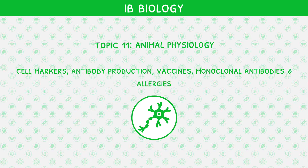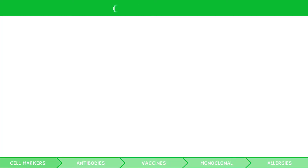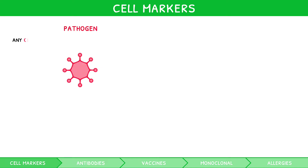Before watching this video, we recommend you have watched both our IB Biology Topic 3 and Topic 6 video series, as they outlined many important fundamentals required here. In the third video of Topic 6, we introduced a pathogen as an organism which causes disease, and we discussed how it can be identified by its antigens.